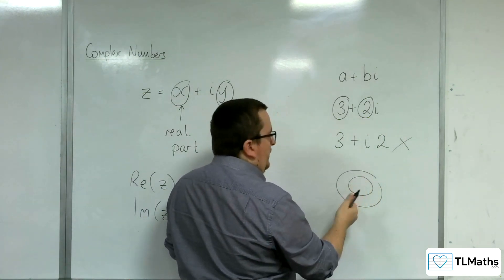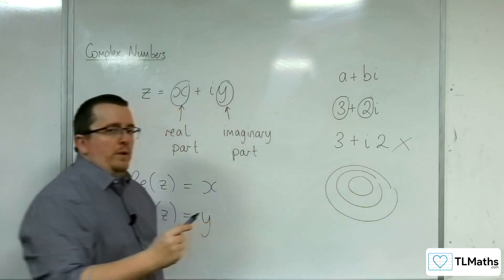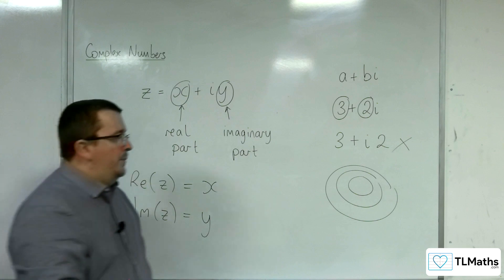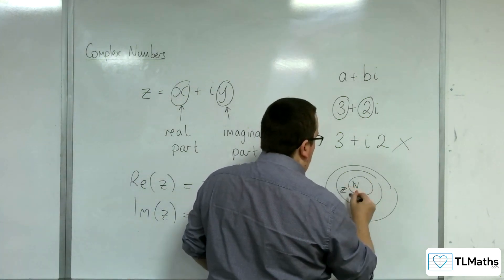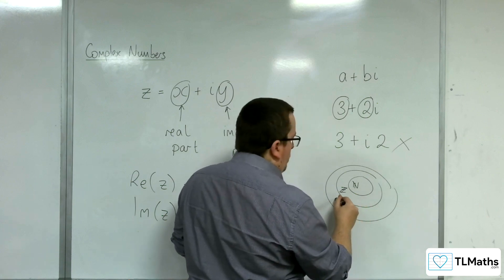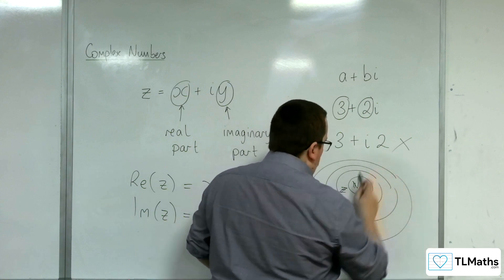Okay. So the natural numbers are contained within the integers. And then we've got the rational numbers. So the naturals. We've got the integers. Then we've got the rationals.